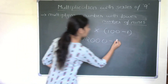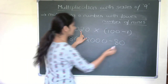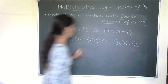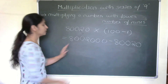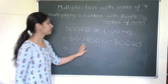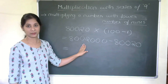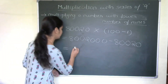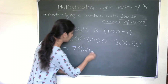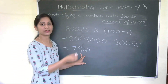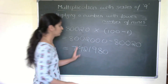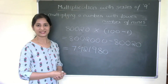So 8002000 minus 80020 gives the answer 7921980. You can subtract and directly write the result. This method applies to any number multiplied by a series of 9s written as a power of 10 minus 1.